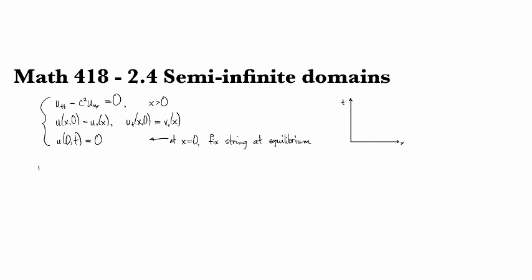We know from studying the wave equation that the solution is going to look like something moving to the right and something moving to the left. With the initial conditions given, we can work out from D'Alembert's formula that this is going to be one-half of u₀(x) minus 2c times the integral from 0 to x of v₀.